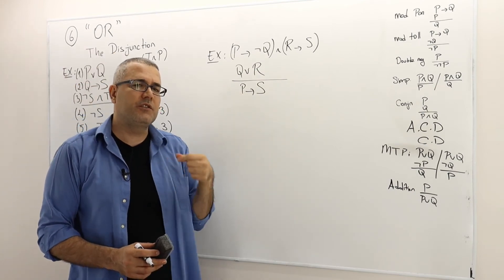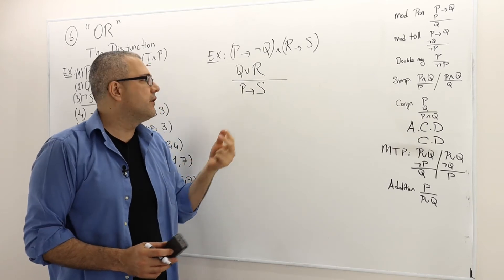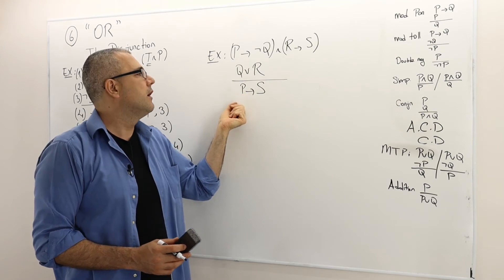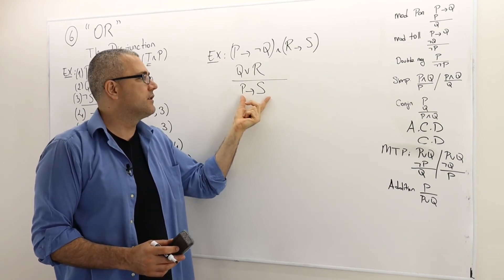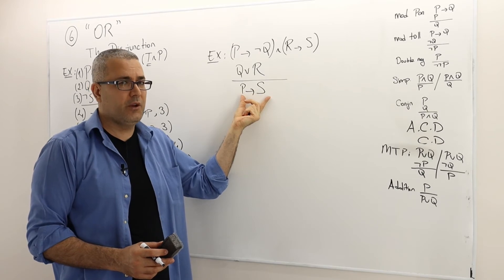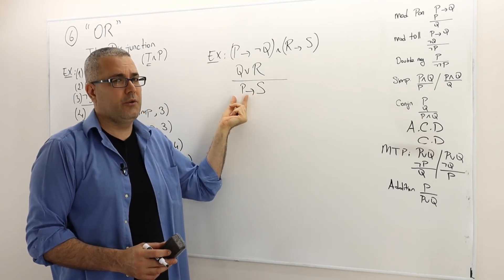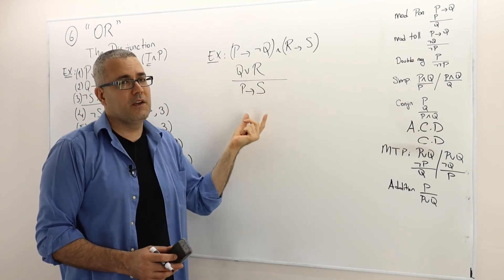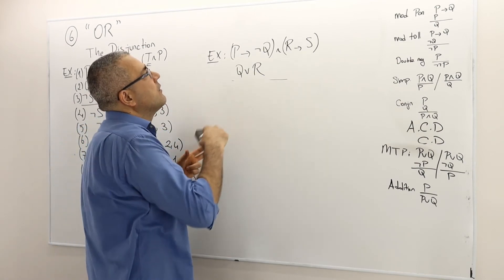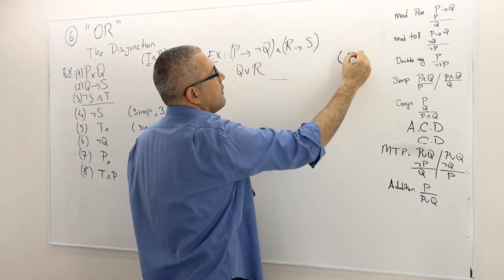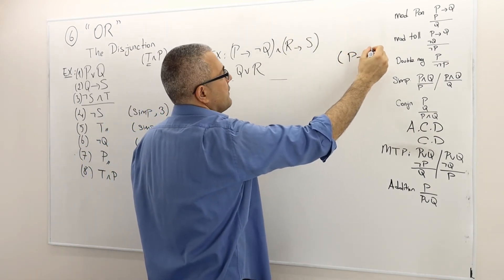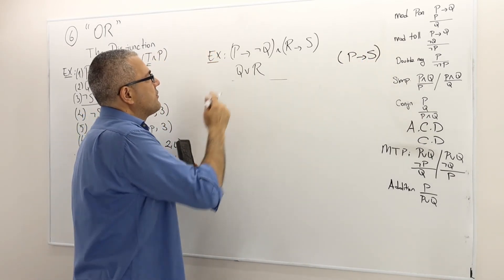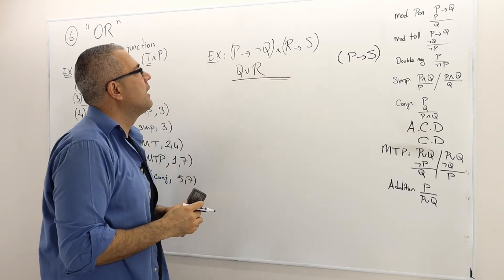So this is a conditional derivation. Remember in the conditional derivation, we start with making the assumption that P is true. If P is false, who cares? This statement P implies S is true anyway. So let's look at the case where P is true. If I can show that S is true, then that means P implies S is true. So let's note my conclusion P implies S here. And let's try to prove the argument.